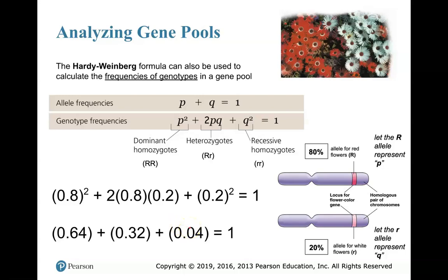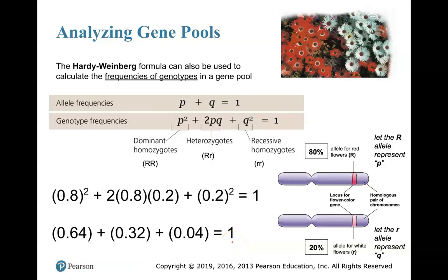Lowercase r, lowercase r — that's white flower color. You can always check your math by adding all the values: they should equal 1. That double-checks that your work is correct. Hardy-Weinberg always equals 1 because the population is always 100%. So 0.64 plus 0.32 plus 0.04 should equal 1 if you did this successfully.